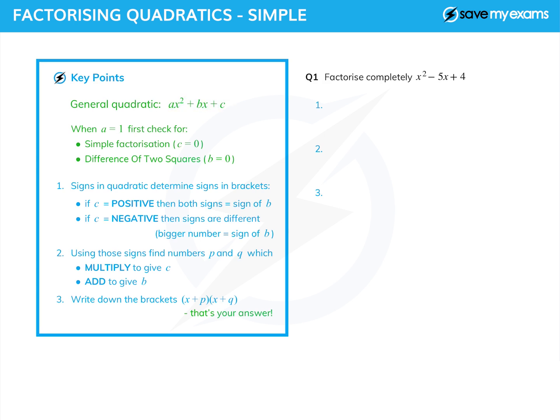Once we've established we've got a full quadratic with three terms and a = 1, what do we do? We need to decide on the signs in our brackets, because that's what we're trying to do: write it in brackets. To find those signs, we look at the signs in the quadratic.